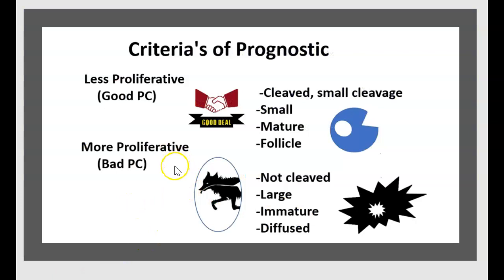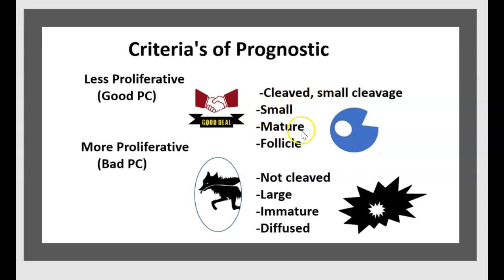Criteria of prognosis: less proliferative is a good prognosis, and more proliferative is a bad prognosis. Good prognosis features include cleaved cells, small cells, mature cells, and follicular pattern. Bad prognosis features include non-cleaved, large cells, immature cells, and diffuse pattern.